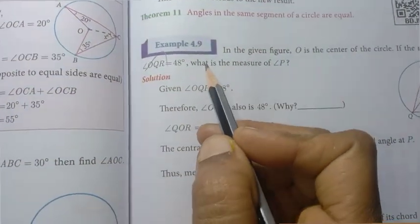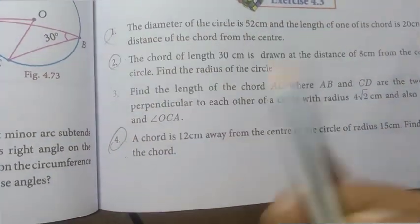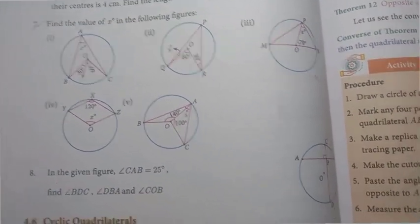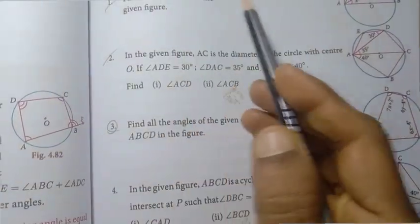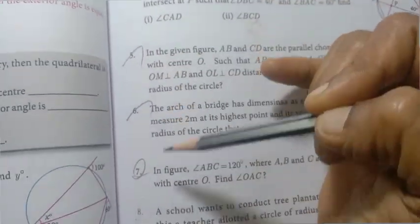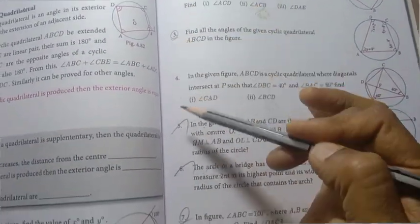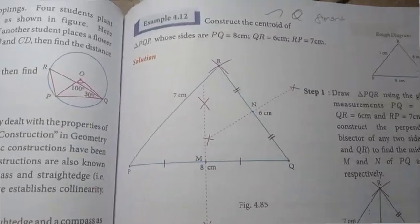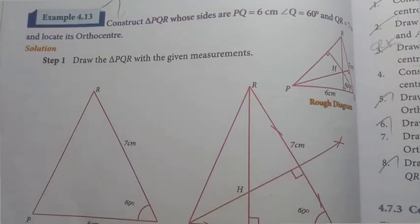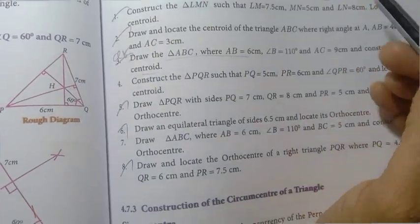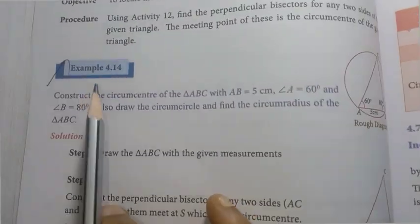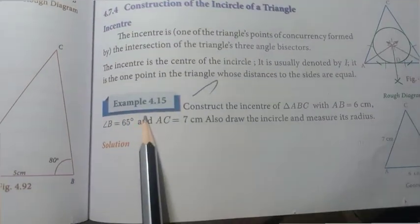Example 4.5 is important. In exercise 4.3, the 1st, 2nd, 4th, 5th, 6th, and 7th are important. Page number 171, example 4.10. Then page number 173, exercise 4.4 — the 1st, 2nd, 3rd, 5th, 6th, 7th are 2-mark and 5-mark questions. The 9th is also important. Then example 4.12, example 4.13, and exercise 4.5 — practice all of these: 1, 2, 3, 5, 6, and 8th are important.